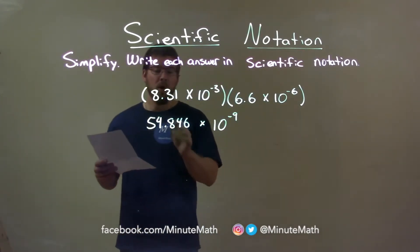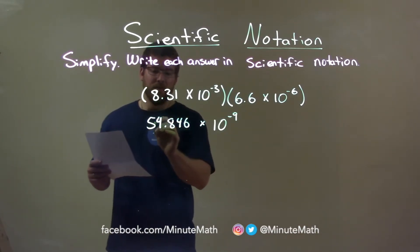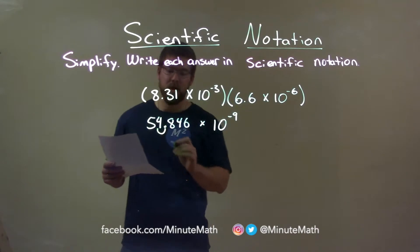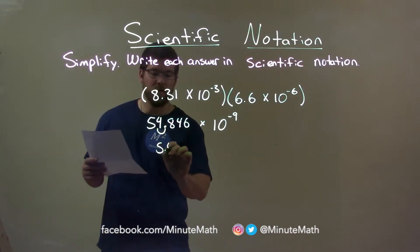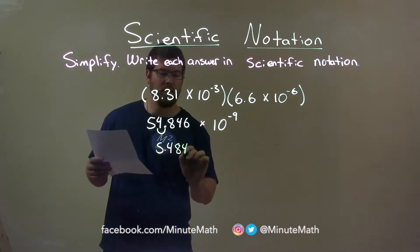Keep going. We know scientific notation states that this 5 here needs to be in the ones position. So our decimal place needs to move one spot to the left, and now we have 5.4846.